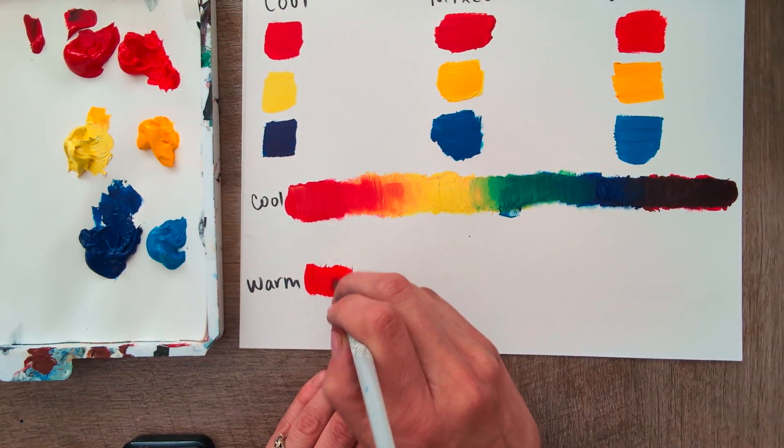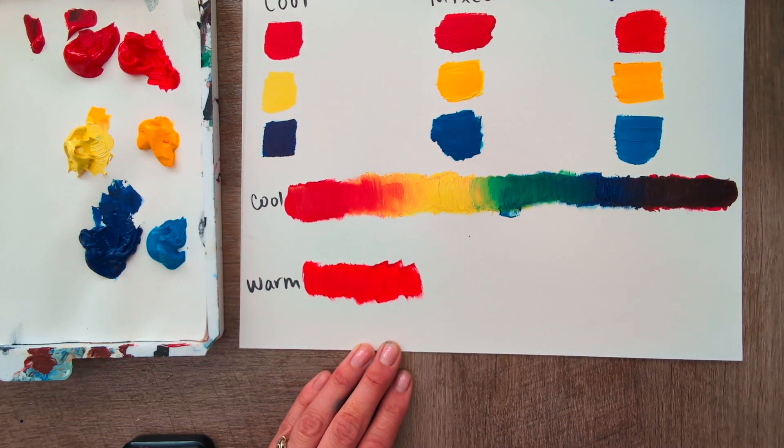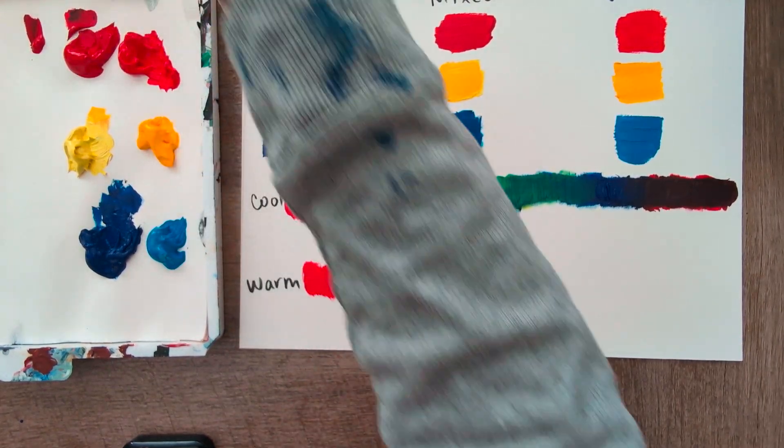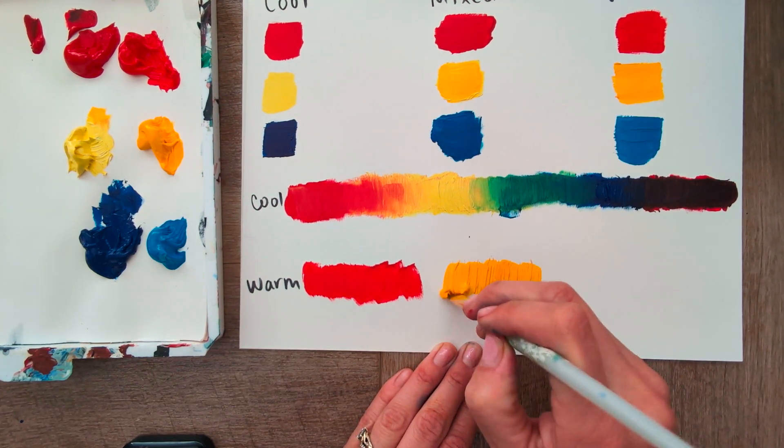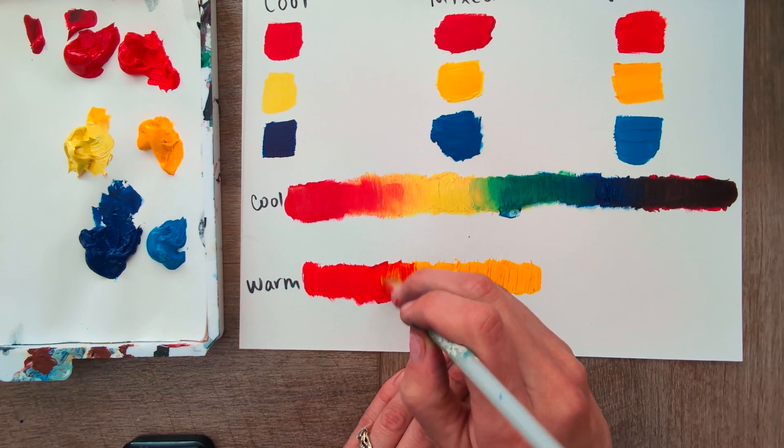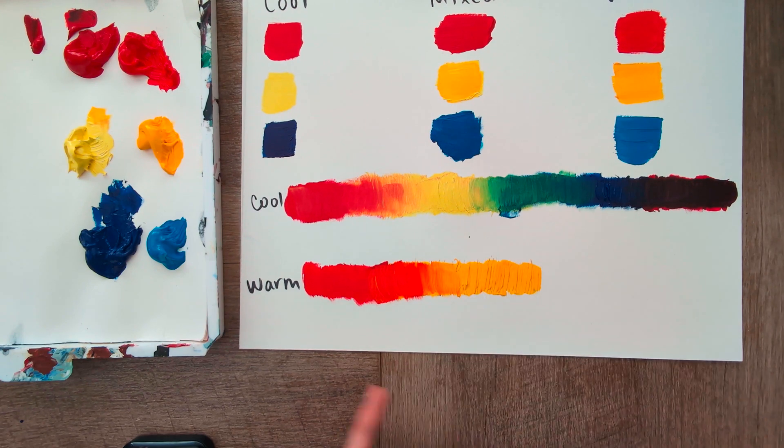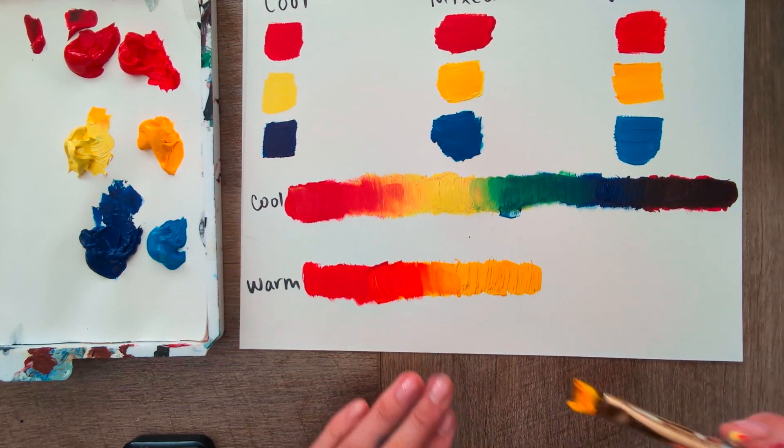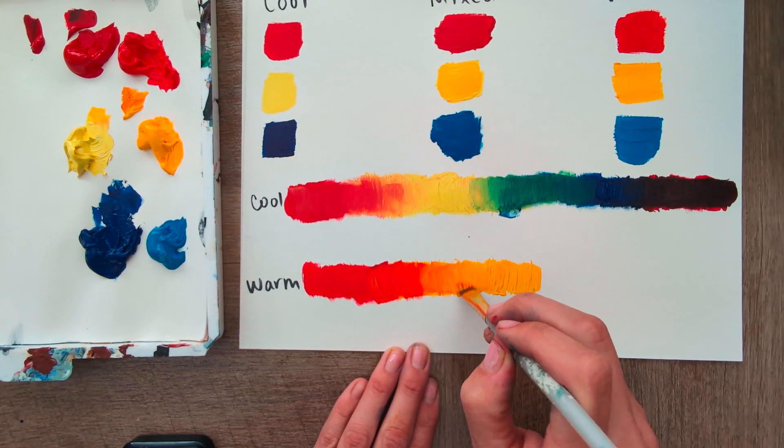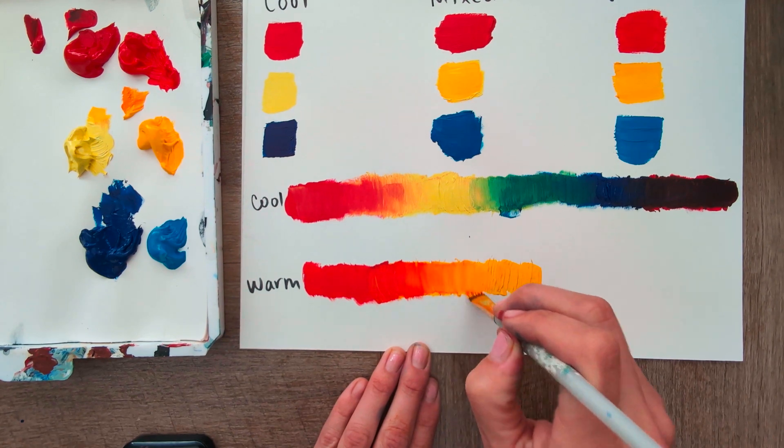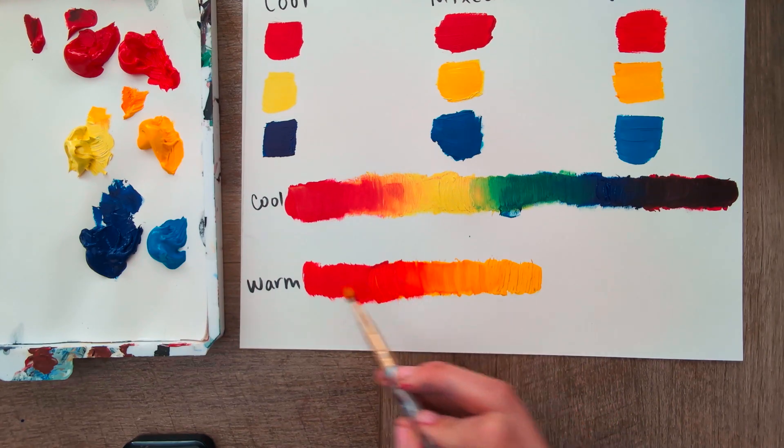All right, warm red. Warm yellow. I'm going to start pretty far back there. I prefer the warm yellow in most cases to the cool yellow. But again, it depends what you're doing. You're trying to accomplish. It just seems to blend a little better already. So we got our yellow, yellow orange, red orange, and red.